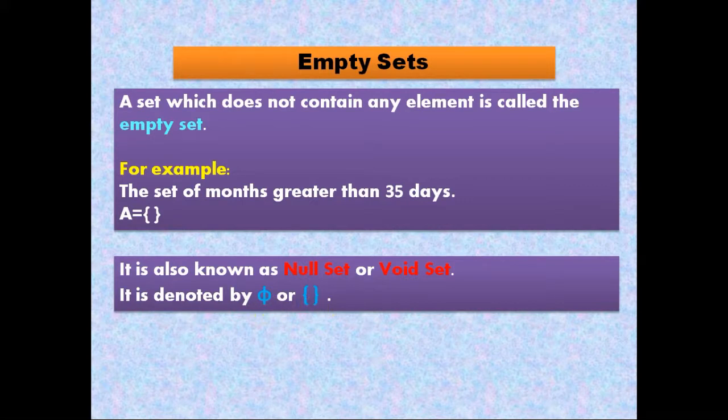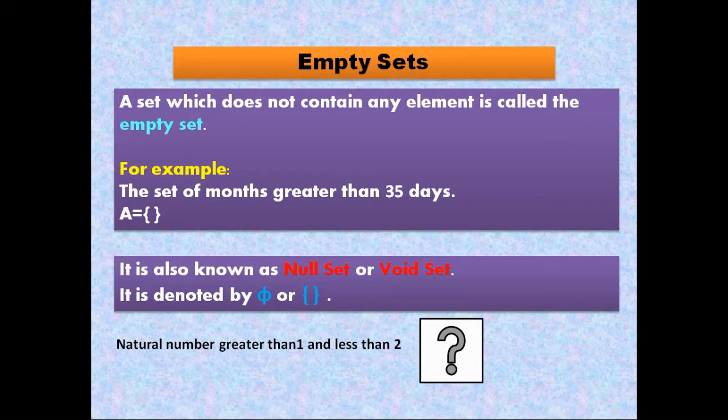Let's see another example. What about the set which consists of natural numbers greater than 1 and less than 2? So it consists of no element, which means it is an empty set.